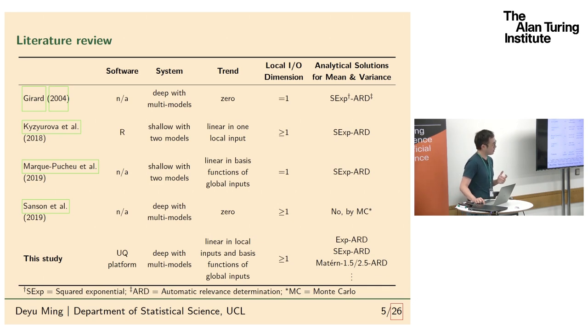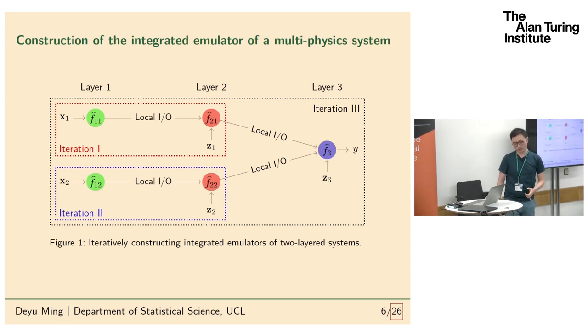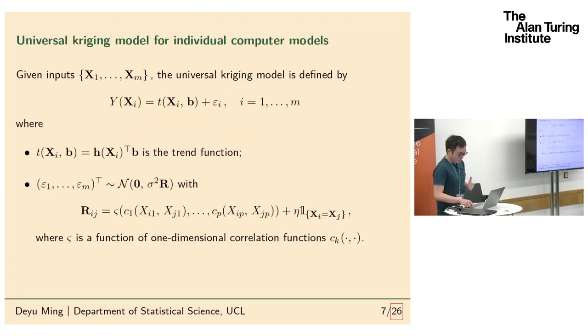How to construct the integrated emulator: Basically, any system of feed-forward multi-physics systems can be collapsed into an elementary two-layered system. So in order to construct the system emulator of the multi-physics system, you just need to construct the emulator of a two-layered system and iteratively integrate them to have the final emulator for the whole system. That's a very simple idea. So the core now is how to construct the emulator of the two-layered system. Basically there are a lot of works on this, and we follow that and do some theoretical expansion.